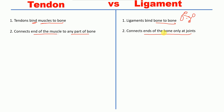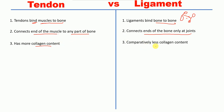Tendon has more collagen content, whereas ligaments comparatively have less collagen content.